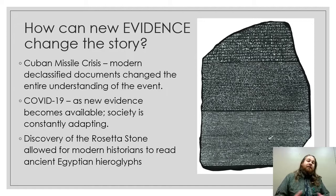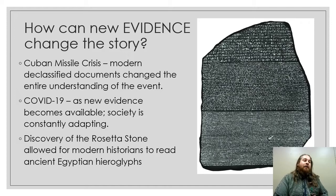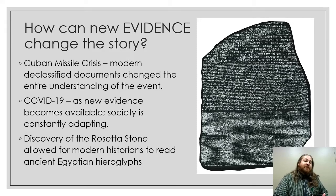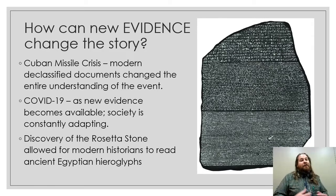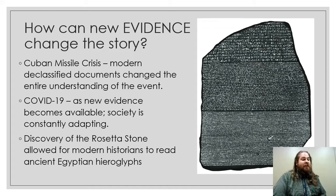When I say evidence is really important, here's what I mean: new evidence can actually change the entire understanding that we have about a past event. For instance, in the modern era, the Cuban Missile Crisis — a huge nuclear event that almost caused a nuclear war. Once government documents were declassified, it was actually found out that Nikita Khrushchev and the Soviet Union had a much larger role to play in actually stopping this confrontation from happening. We never would have known if we didn't get that additional evidence.